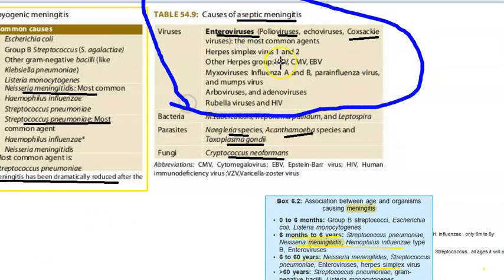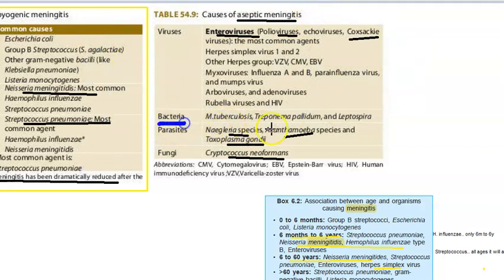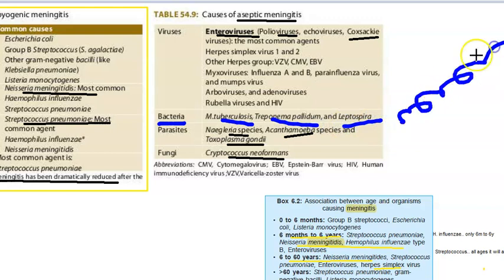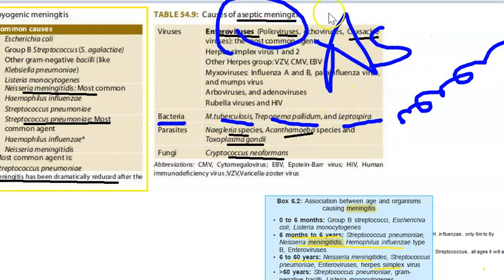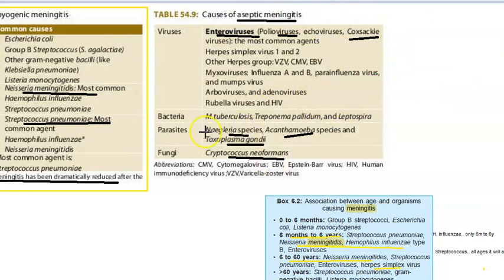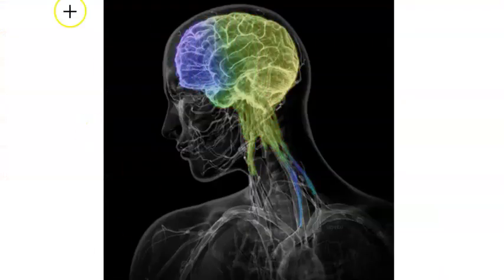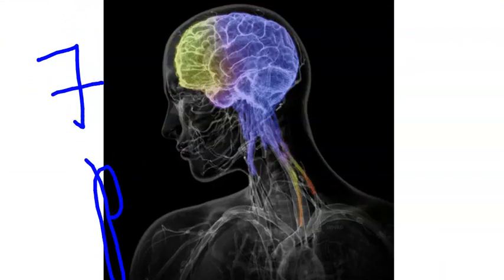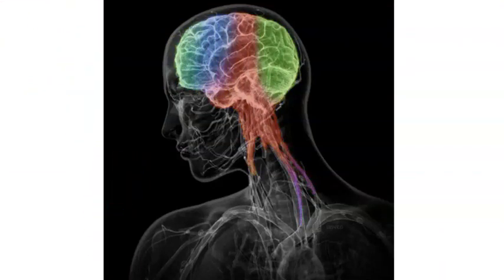Remember: all the viral causes are aseptic meningitis. Additionally, some bacteria also cause aseptic meningitis — notably Mycobacterium tuberculosis, Treponema pallidum (the syphilis-causing bacterium), and Leptospira. These bacteria cause aseptic rather than pyogenic meningitis.